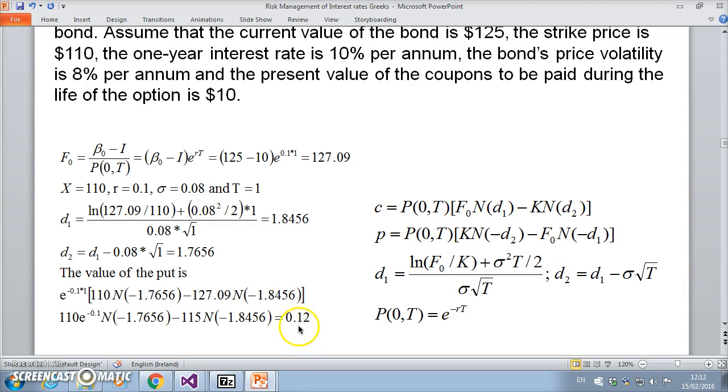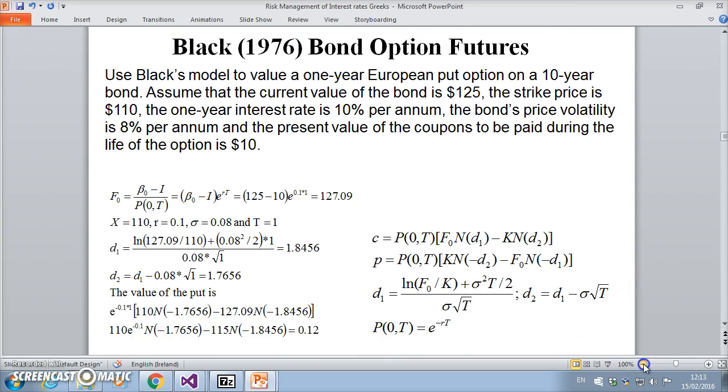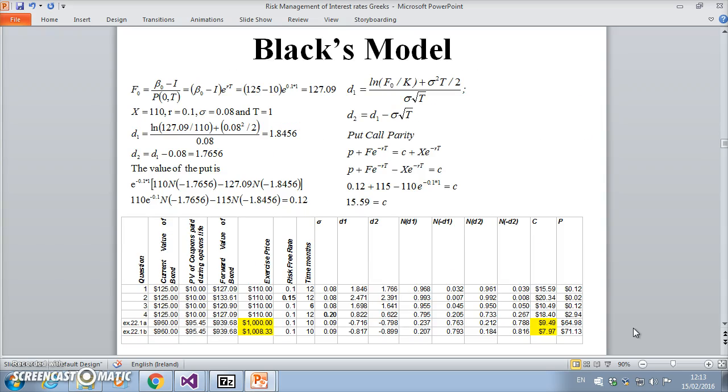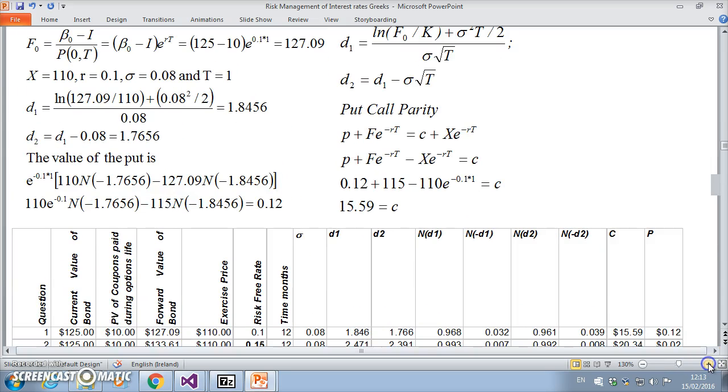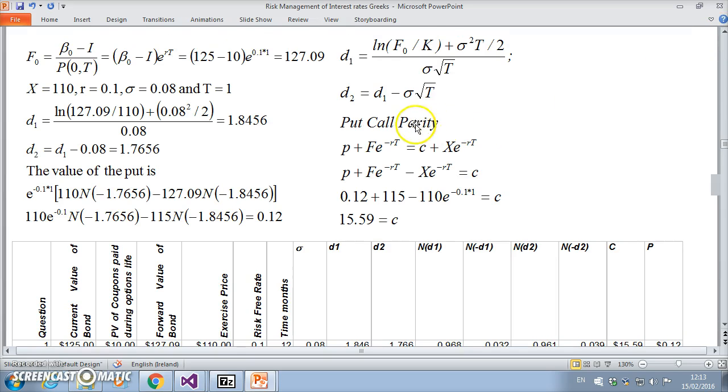If we wanted to estimate the value of the call option, we could use the Black model again, or we could make reference to put-call parity. For futures options, put-call parity also must apply, and the basic identity would be: put + discounted value of futures = call + discounted value of the exercise, where X here is the exercise or K, so I'm using those two a little bit confusingly as just meaning the exercise.